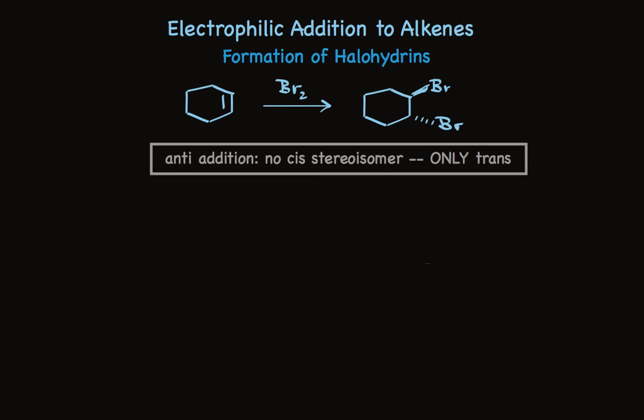Now take a look at what happens when we add bromine to an alkene but water is present as well. We add bromine to one carbon, but the other alkene carbon adds a hydroxy group. Again, there's a trans-relationship between the two groups that have added to the alkene carbons. We've seen anti-addition, and this reaction is stereoselective.